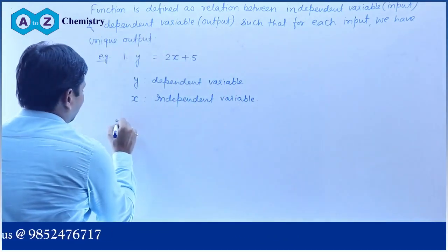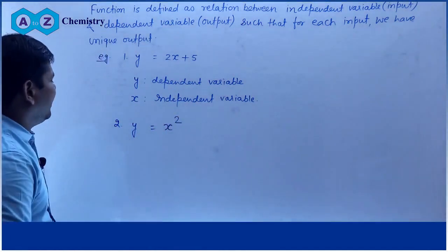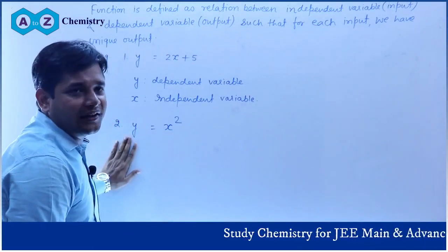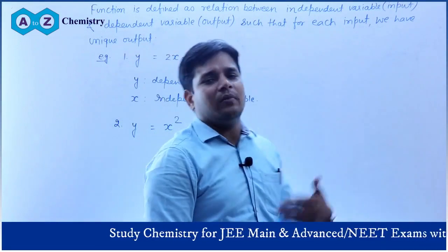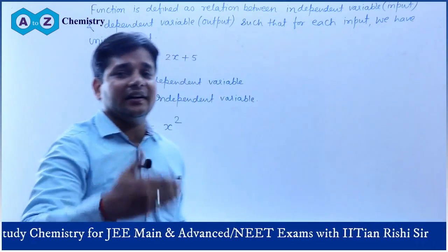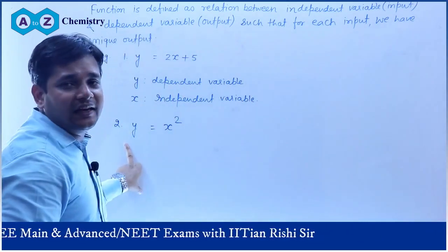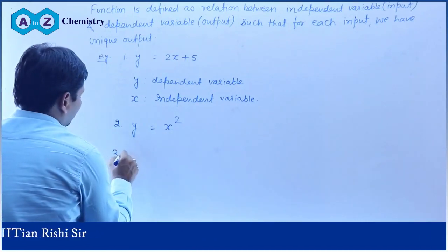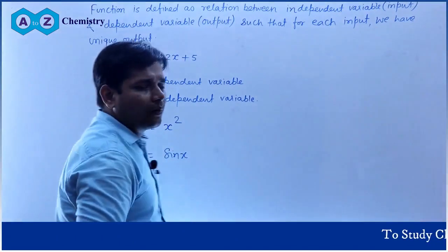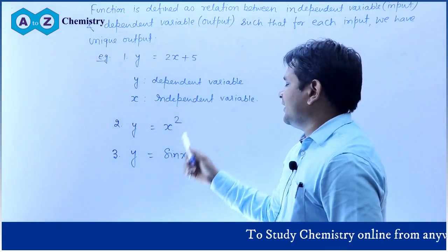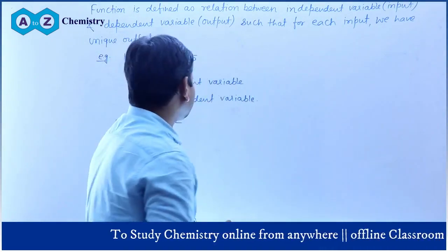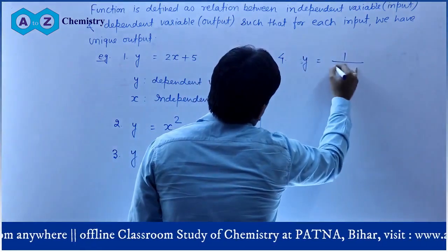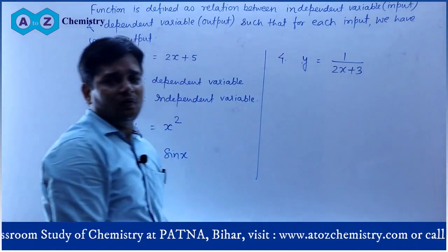Normally हम लोग y से represent करते हैं dependent variable को और x से independent variable को। For each x we should have unique value, तो y is equal to 2x plus 5 एक function है। अगर इसी तरह से दूसरा relation लिखते हो y is equal to x square, तो यह भी एक function है — for each value of x we have unique value of y। हर x के लिए एक y की value आनी चाहिए। y is equal to 1 by 2x plus 3 — यह भी एक relation है जो function का लाएगा।